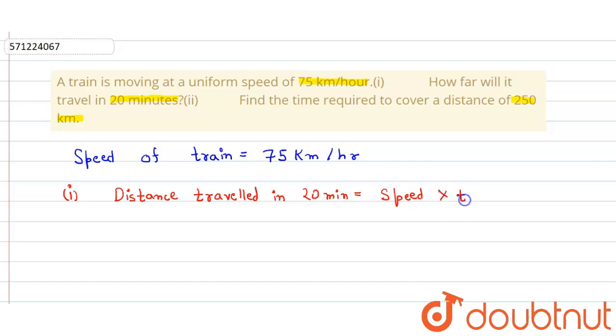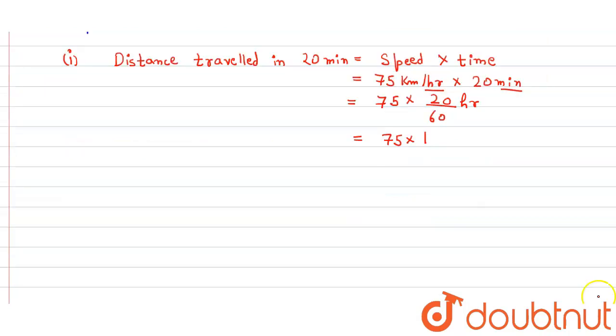into time. So speed is given which is equal to 75 kilometer per hour, and the time is 20 minutes. Here, before solving it, we have to look for the unit. Here it's minute and here it's hour, so we have to convert the minute into hour, so we divide it by 60. So here it's converted to hour. So now we can cancel out and then we get 75 into 1 by 3, which is equal to